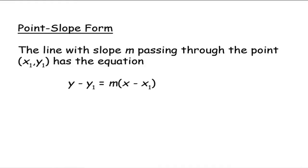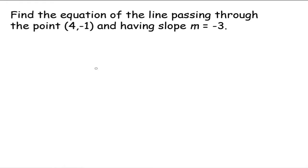So here's an example. This example says find the equation of the line passing through the point 4, negative 1, and this line has a slope of negative 3. So the first question you should ask yourself is what information are we given? Well, we're given a point that our line goes through, and we're given the slope of that line.